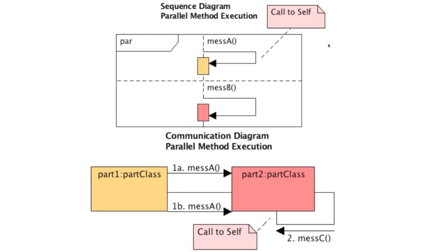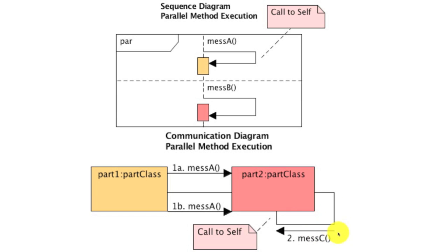I also want to draw your attention to a call to self. With sequence diagrams, you draw a little arrow out that then bounces back, used to demonstrate an object calling its own method. However, a call to self with a communication diagram is shown with a box with no arrows, and then outside of that box — which looks like it's laying underneath the participant — you draw an arrow inside and put a message number and the message itself. Those are the different ways to show parallel executions and call to self across both diagram types.